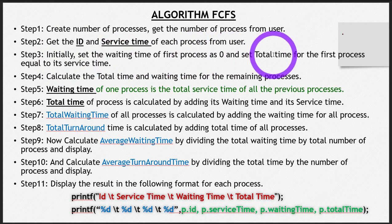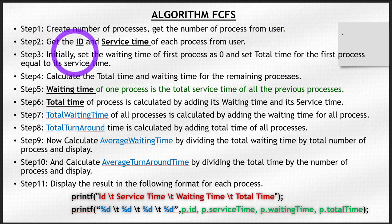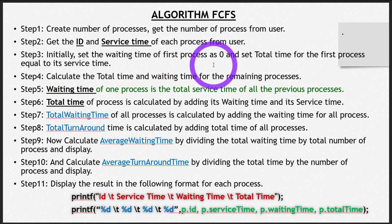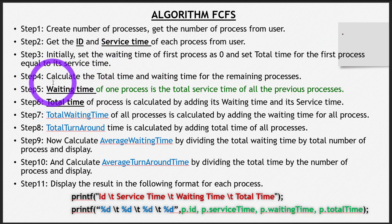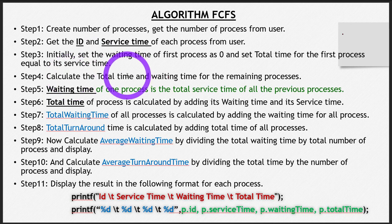The third step is to set the waiting time of the first process as zero, and the total time of the first process as its service time. We have discussed this in detail in the previous slides and previous videos as well.